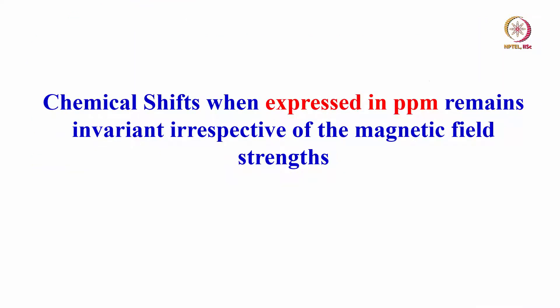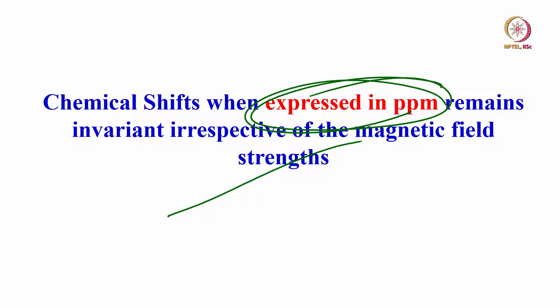Chemical shift expressed in ppm is invariant with respect to the magnetic field. If I measure a peak at 4 ppm in a 400 MHz spectrometer and record it in any spectrometer of any frequency, when expressed in ppm it remains at 4 ppm. For example, two peaks at 1 ppm and 2 ppm at 400 MHz remain at 1 and 2 ppm at 800 MHz and 1.2 GHz — but in frequency they are different.